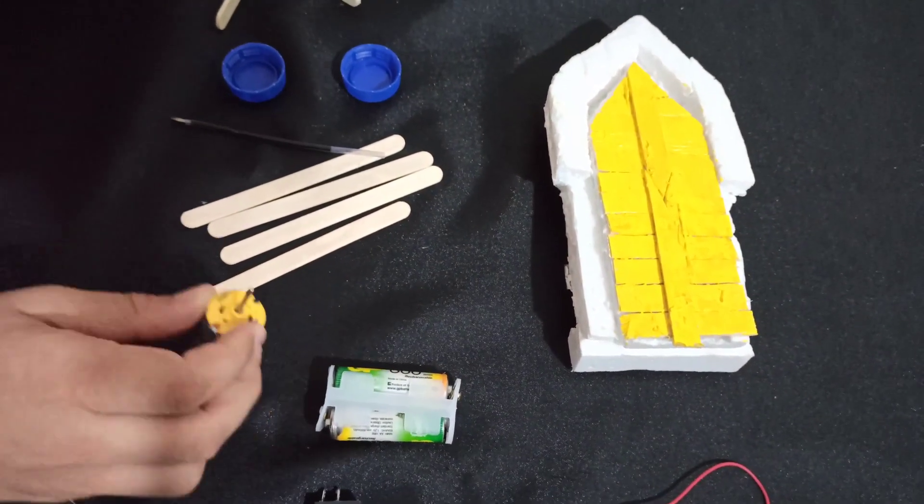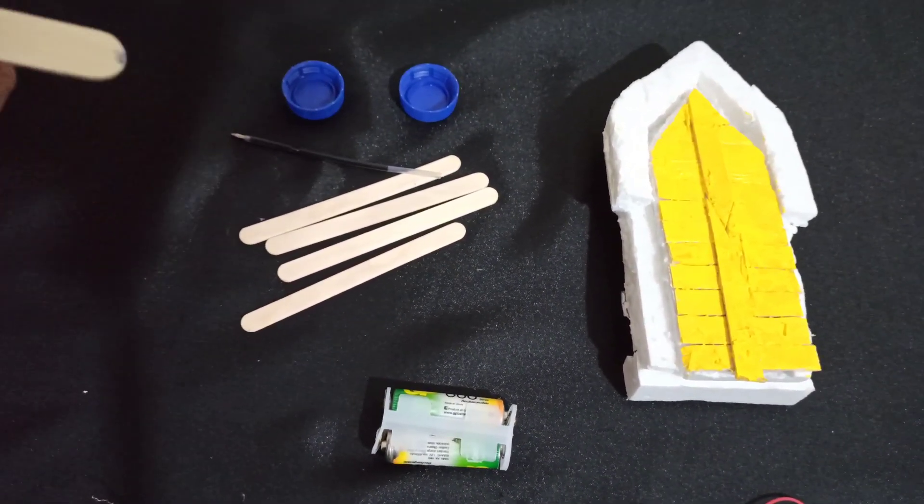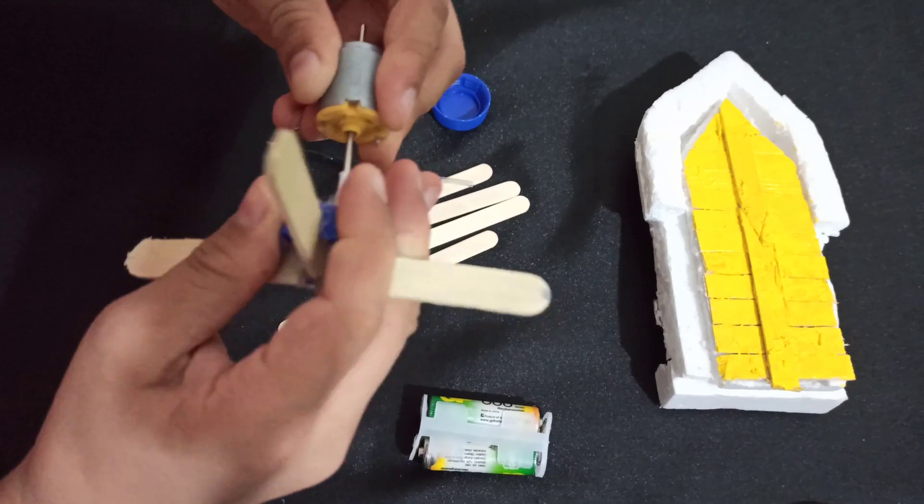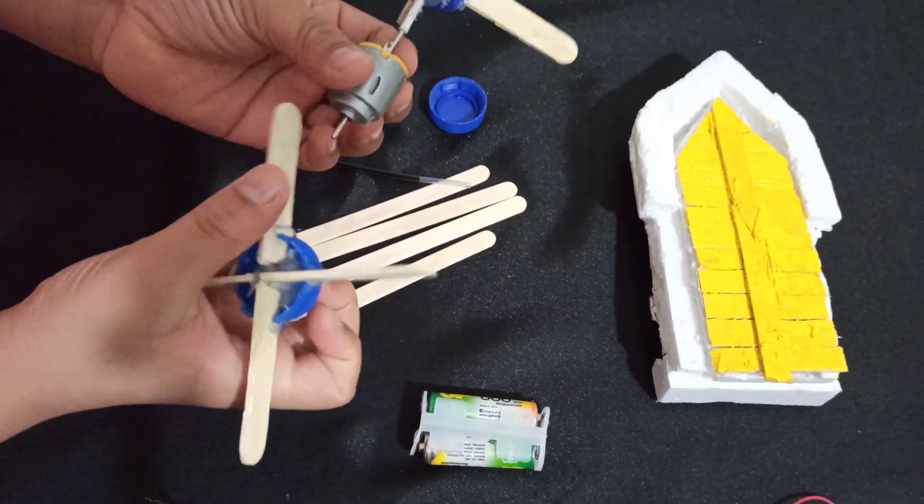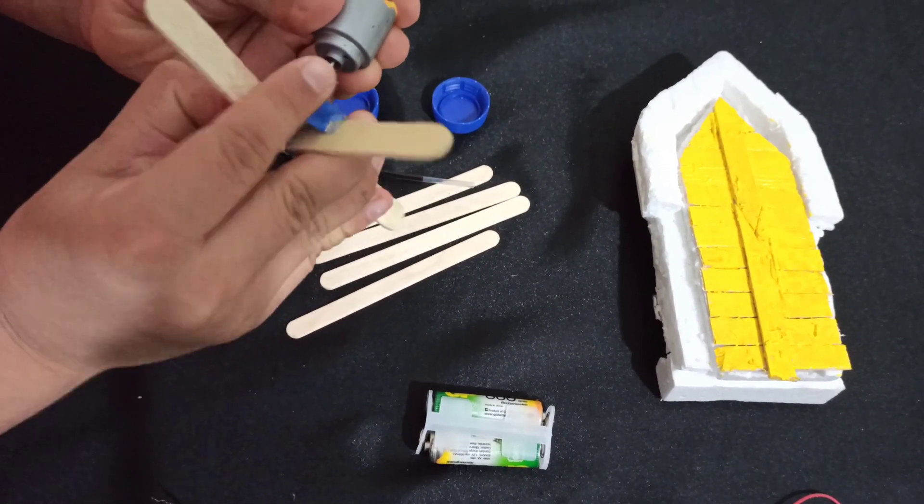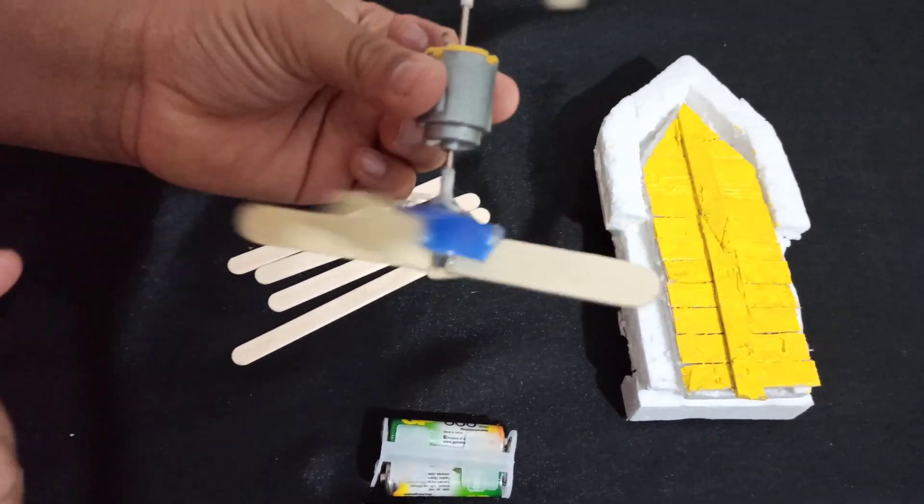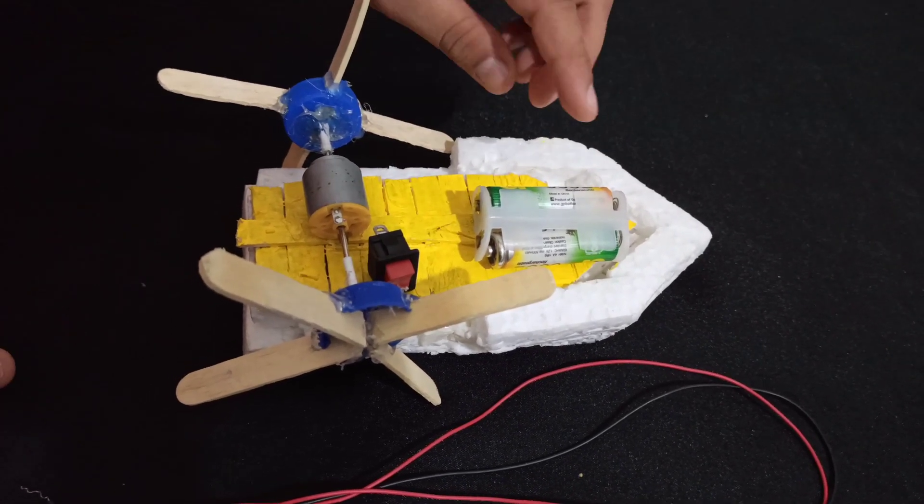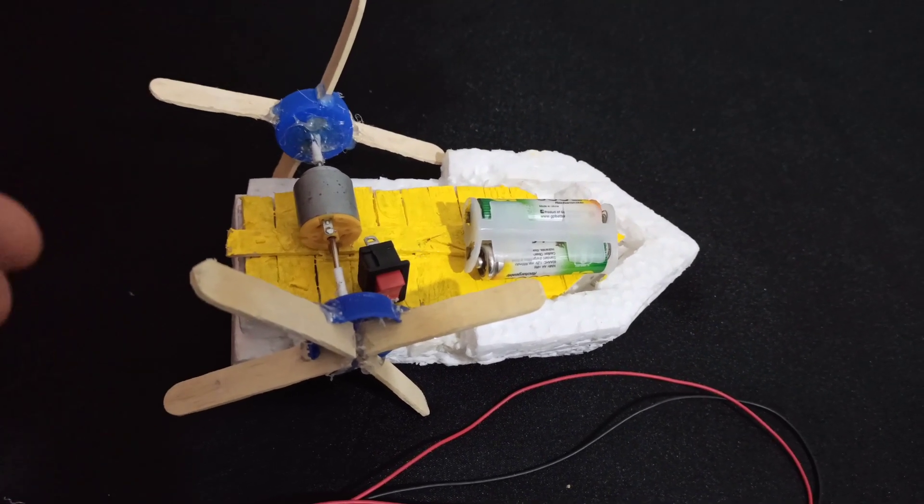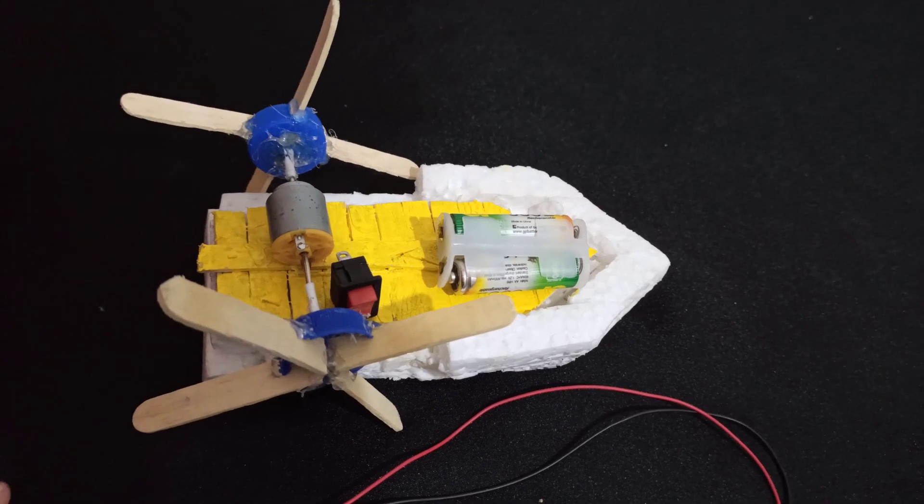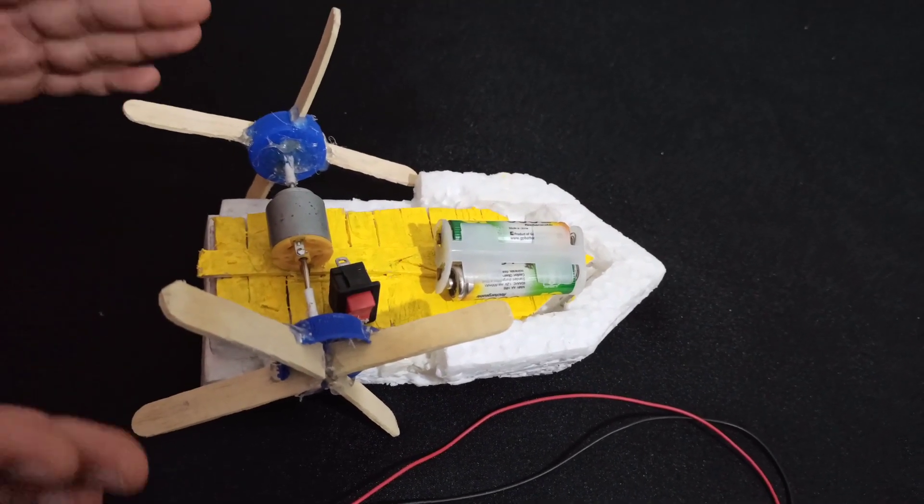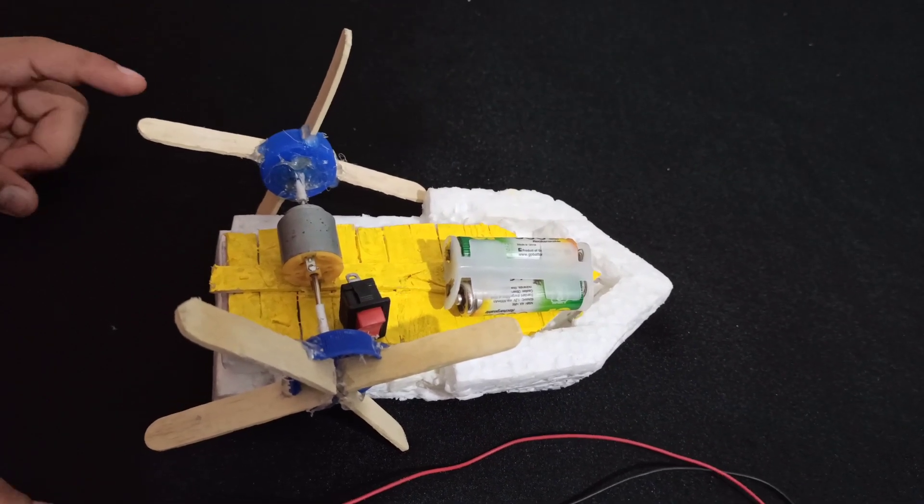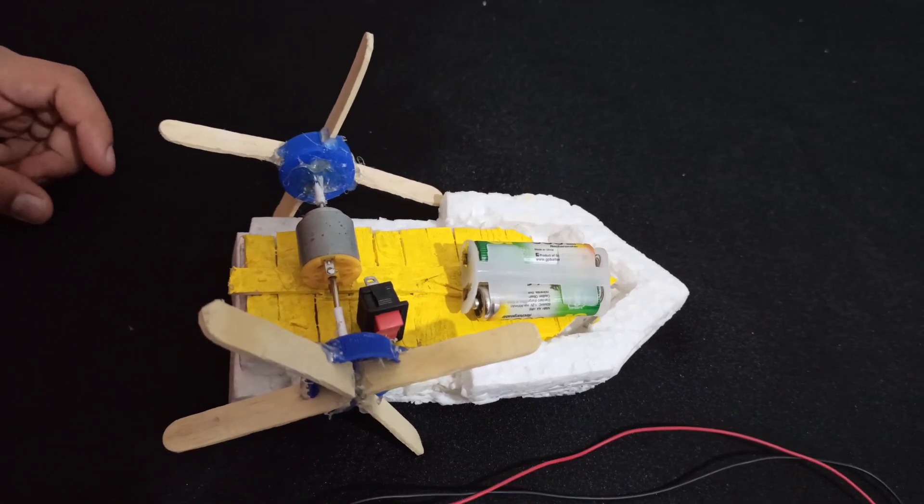Now you have to take your motor and attach your paddlers like this. So that the weight should be equally distributed, now we attach everything with hot glue, and then we need to connect our wires to the motor, our switch, and our batteries using soldering iron.